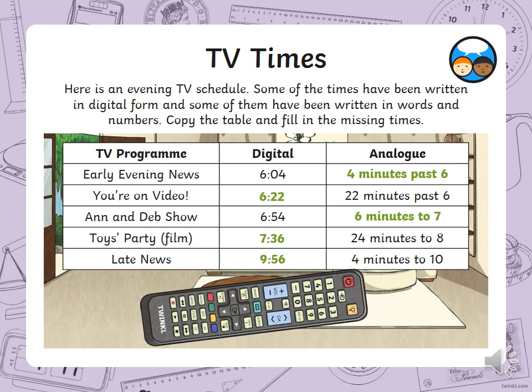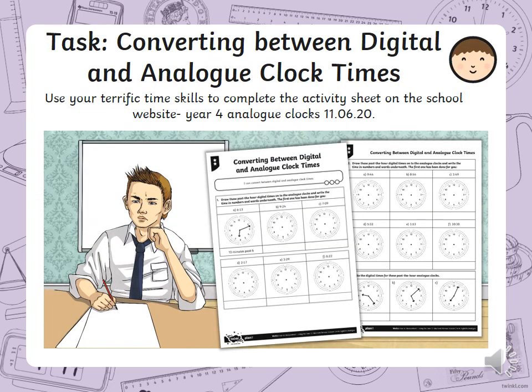Here is an example of a TV schedule — some times are written in digital form and some in words. Copy the table and fill in the missing times, converting between digital and analogue formats. Your task for today is to use your terrific time skills to complete the activity sheet on the school website — Year 4 Grange Analog Clocks. Good luck guys and please send over any work that you do.